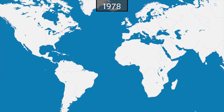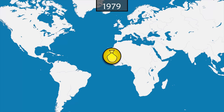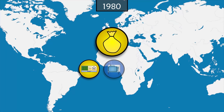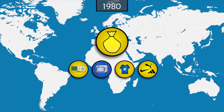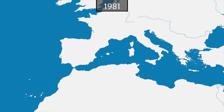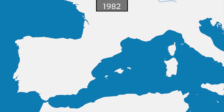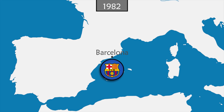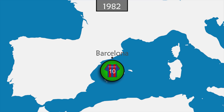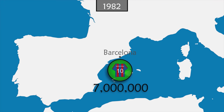Football becomes more and more popular, generating more and more money through ticket sales, TV rights, merchandising, and advertising. Clubs are getting richer and attracting bigger investors, while the value of players is rising. In 1982, FC Barcelona buys the new Argentine star Diego Maradona for a record amount of roughly seven million euros. That same year, post-Franco Spain hosts the World Cup — the first to be played by 24 teams — and is seen by one billion viewers worldwide.